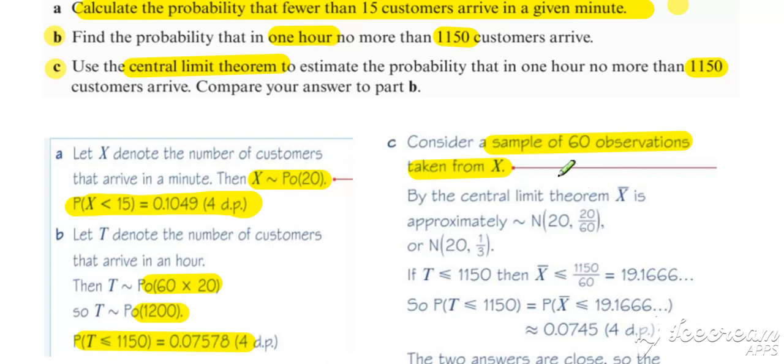So that gives us a sample size of 60. And then by the central limit theorem, we can say that if we're considering the distribution of X bar of the 60 observations, so the mean of how many observations we got in each one minute period, then that will approximate to a normal distribution with a mean of 20, a reduced variance.